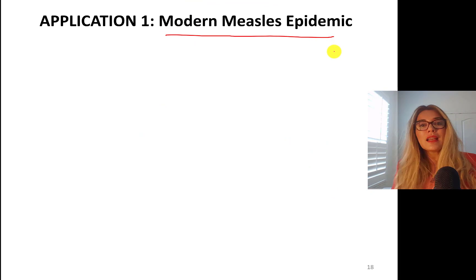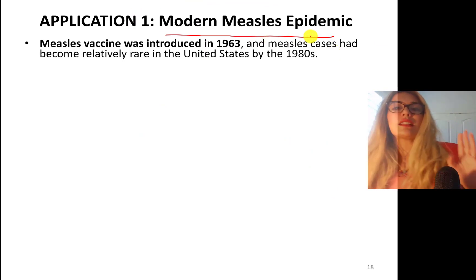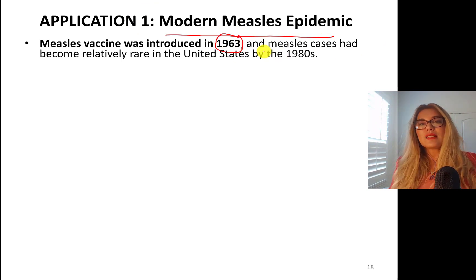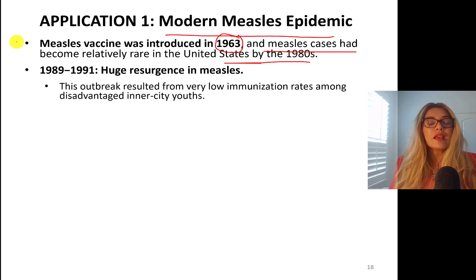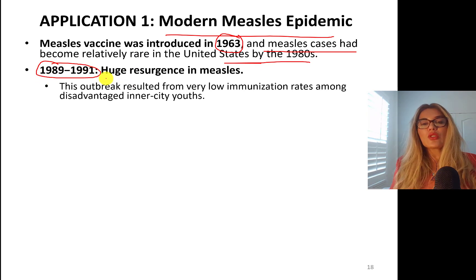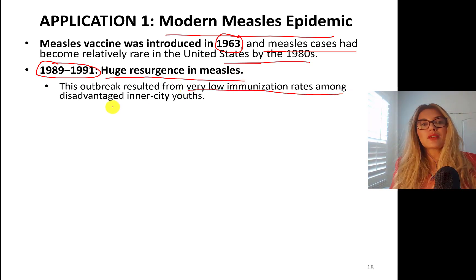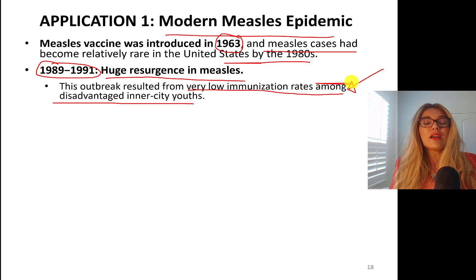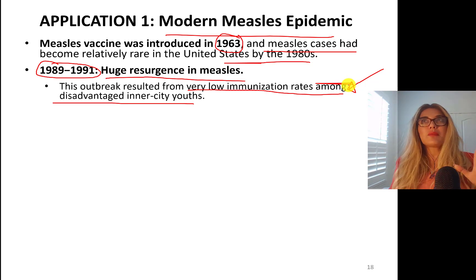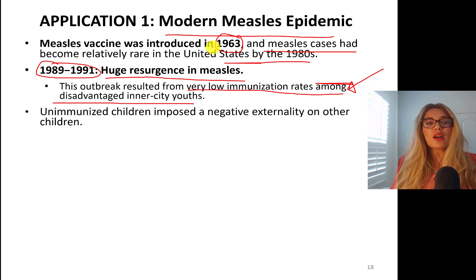Let's talk about the modern measles epidemic. The measles vaccine was introduced in 1963, and measles cases became really rare in the United States by the 1980s. In 1989–91, there was a huge resurgence in measles cases — a major outbreak. This was due to very low immunization rates among disadvantaged inner-city youth who didn't have access to the vaccine, not an anti-vaxxer movement. Unimmunized children imposed a negative externality on other children.